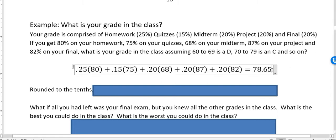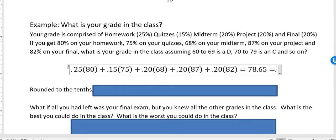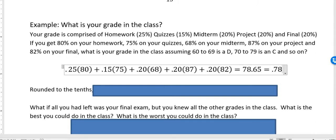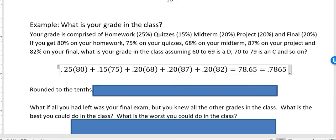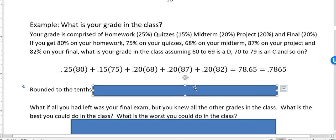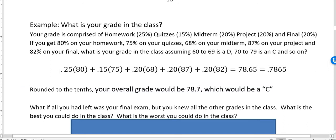If you want to think about that as a percentage, then you would just move that decimal point over two places. 0.7865 would say, as a decimal, excuse me, 0.7865. And as a percent, it's 78.65. So either way you look at it, we have a grade that's in the C range. And then if we round that to the tenths, you'd have a 78.7, which would be a C. So this is the percent grade, this would be the decimal grade, and that would put you at a C.